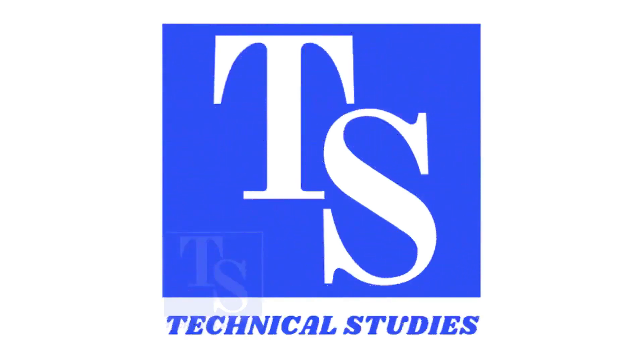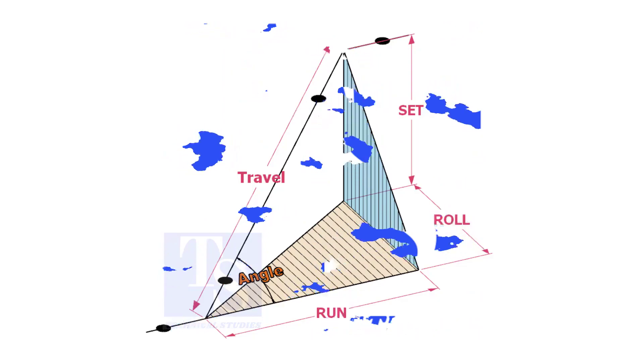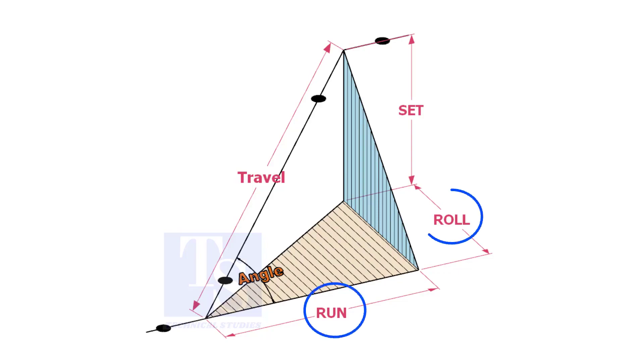Welcome to technical studies. In a piping drawing of a double rolled offset, usually the dimensions of the run, set, and roll are given.